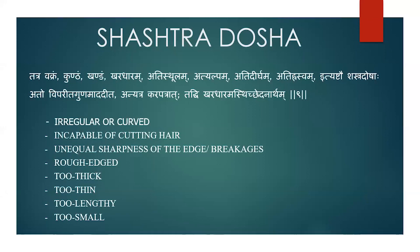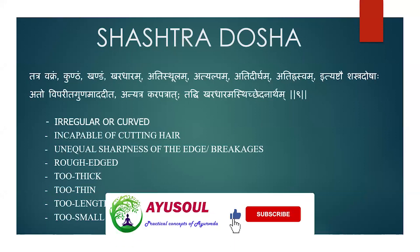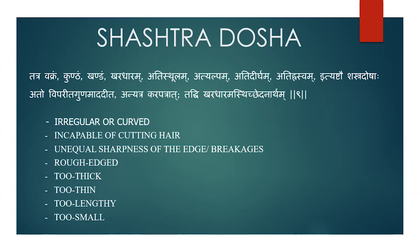The Shastra dosha or defects are: Vakra — irregular or curved edges; Kuntam — incapable of cutting even a hair; Khandam — related to breakages or unequal sharpness of the edge; Khardhaharam; Ati Sthulam — too thick; Ati Alpam — too thin; Ati Dirgham — too lengthy; and Ati Hraswam — too small. These are the eight Shastra dosha. Only the Karpatra has to be rough-edged, as it is used for cutting bones — this is considered an exception.